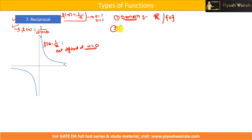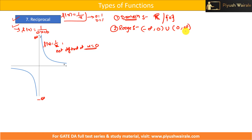What about the range? Here you can see y tends to infinity and y tends to minus infinity when x approaches 0 from the negative side. But the graph is not touching the x-axis, so the function will never become 0. The range is (-∞, 0) union (0, ∞). And the domain is also the same: (-∞, 0) union (0, ∞). So for 1/x, domain and range are the same.